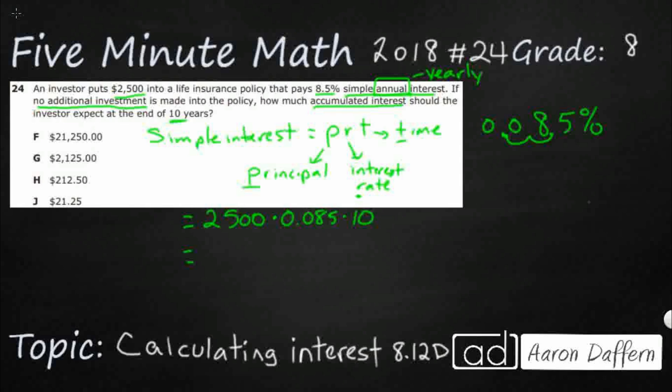So we're going to first multiply the 2,500 times 0.085. So we're going to get our principal times our interest rate and we're going to get 212.5. So if we want to keep it money, we can keep it 212.50, right? Which is an answer. It's an answer right there, H.